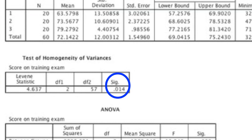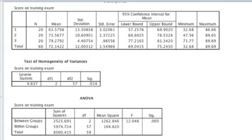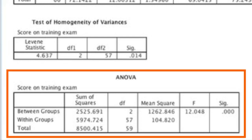We can use the Welch correction to fix this, which is further down in the output. For now, let's pretend that the assumption of equality of variance was met — so let's pretend the p-value for Levene's test was 0.089, so it's not significant. If the assumption of equality of variance was met, you would look at the overall one-way ANOVA table, which is the third table in this output. You'll want to interpret the p-value in this table. The p-value is 0.000, which suggests that there are differences in sales performance between the three types of sales training somewhere. However, we don't know where these differences are, so we have to interpret the post-hoc analysis.